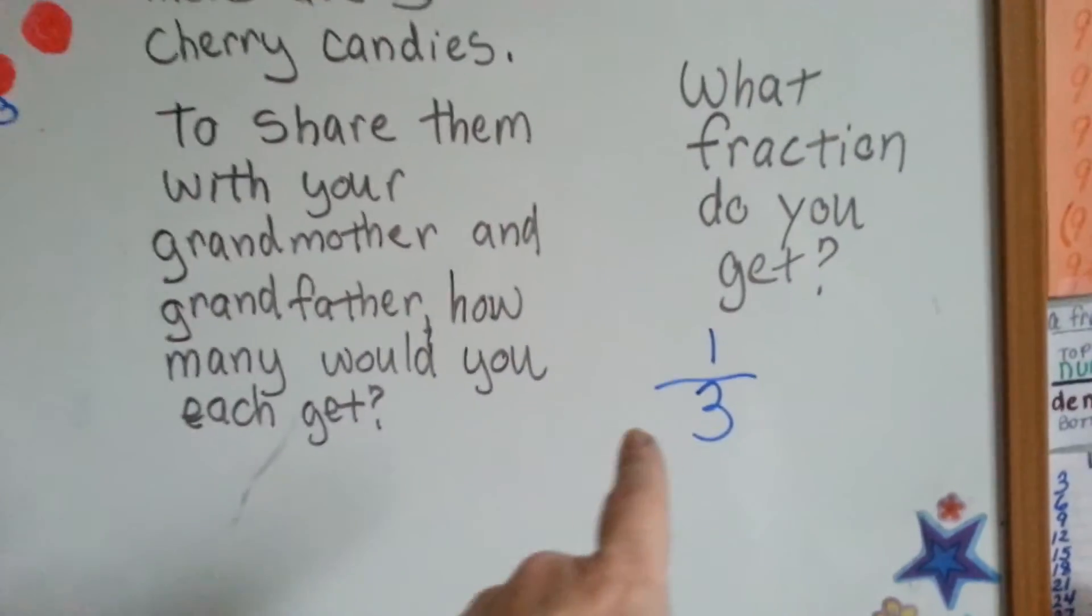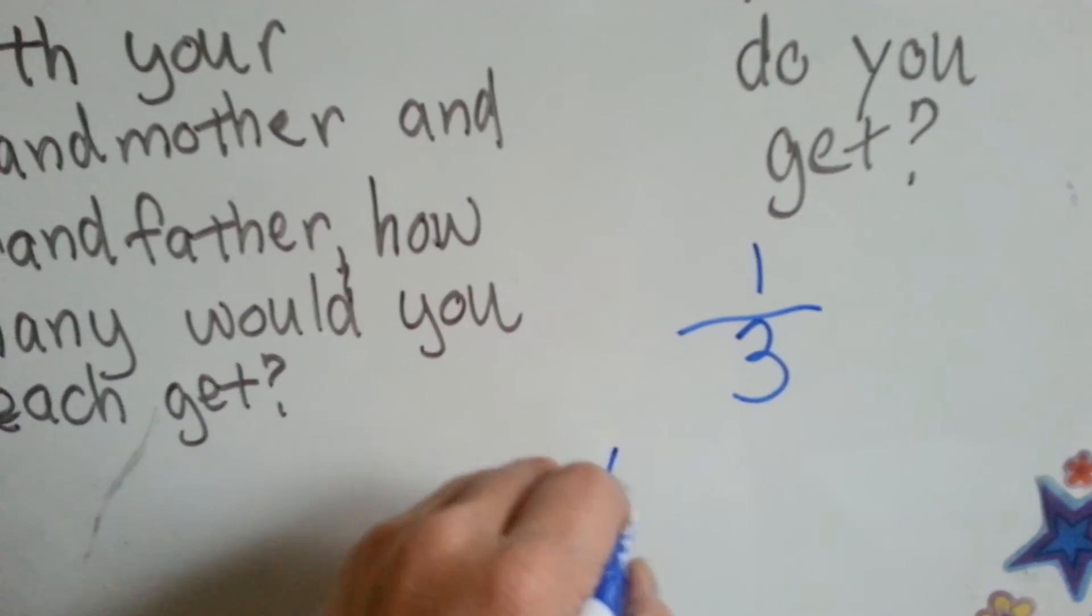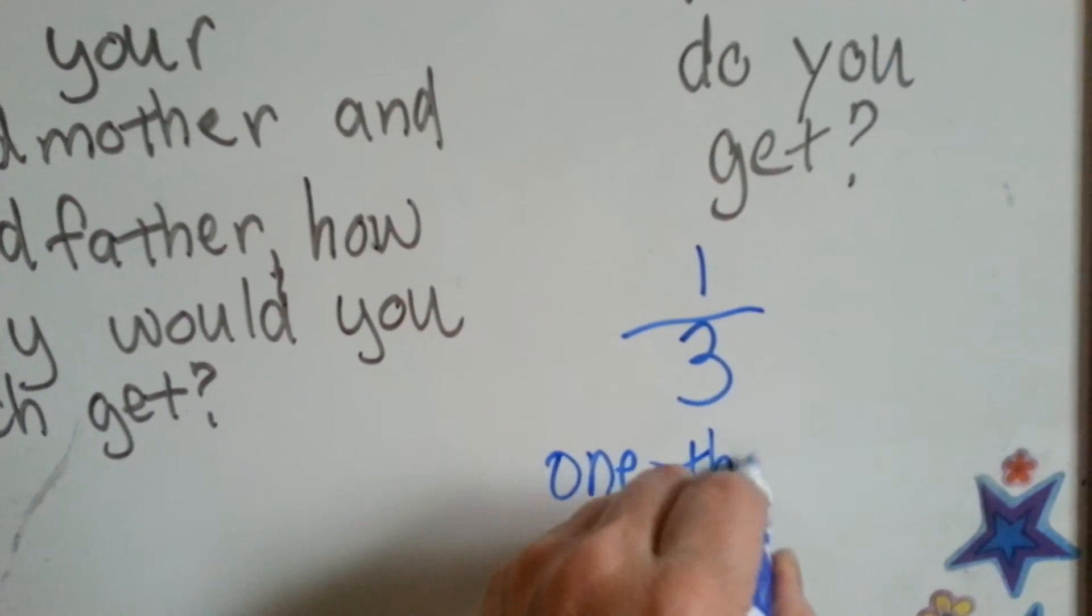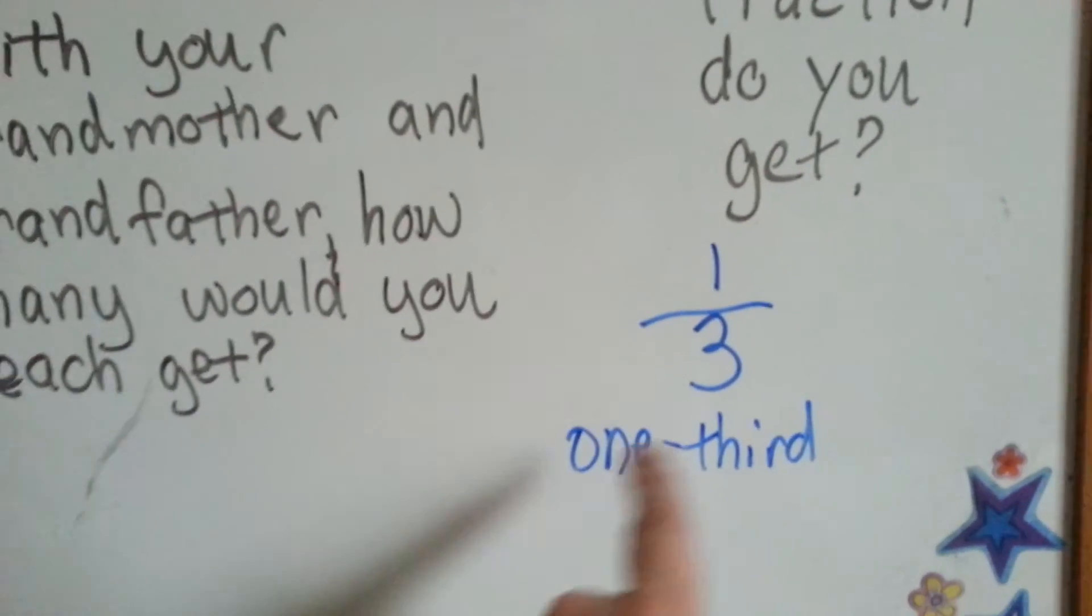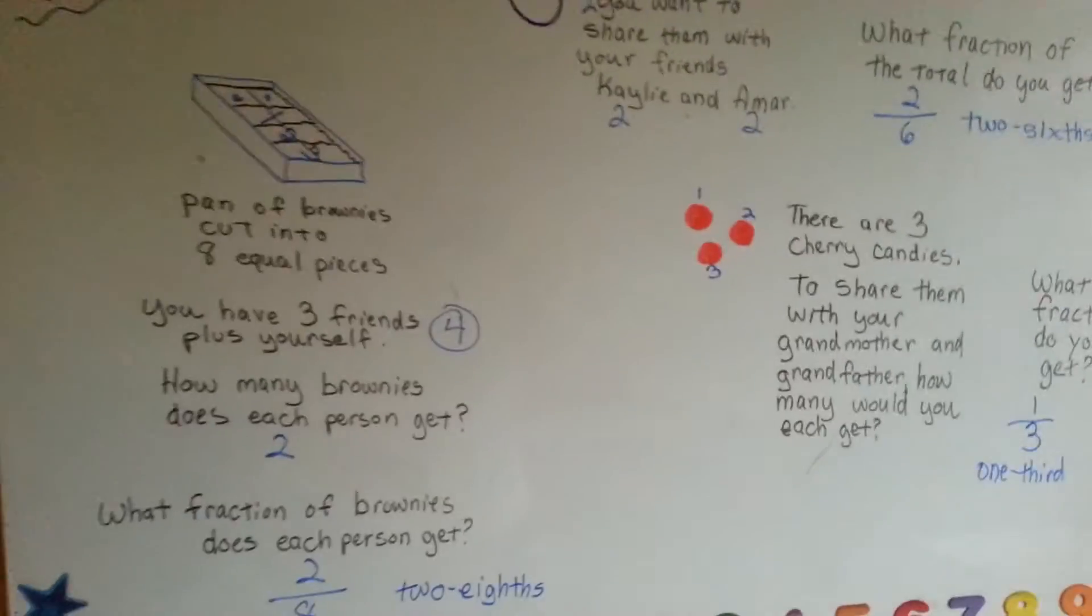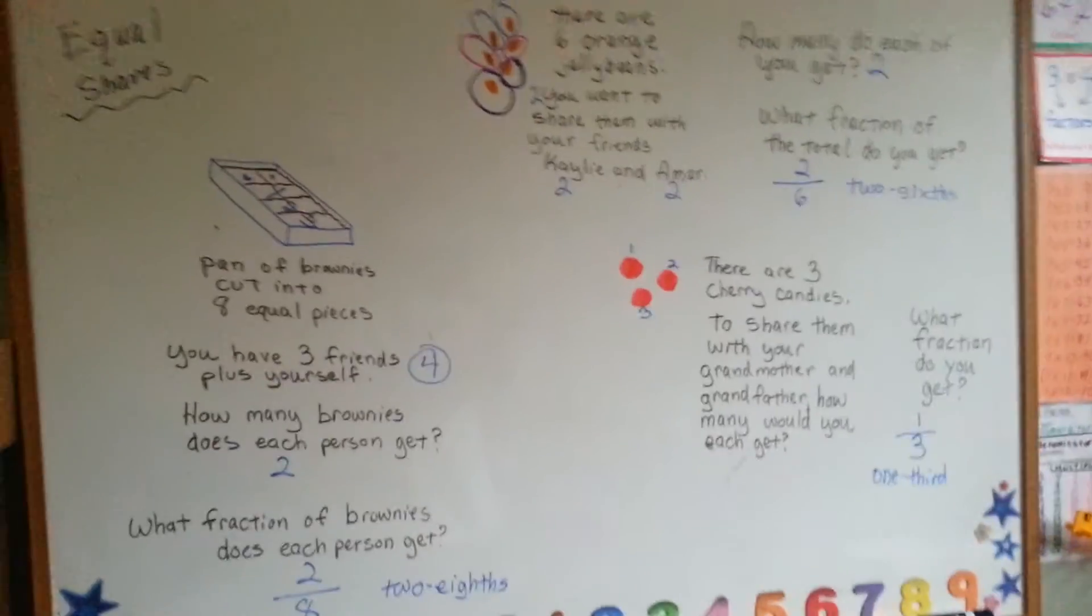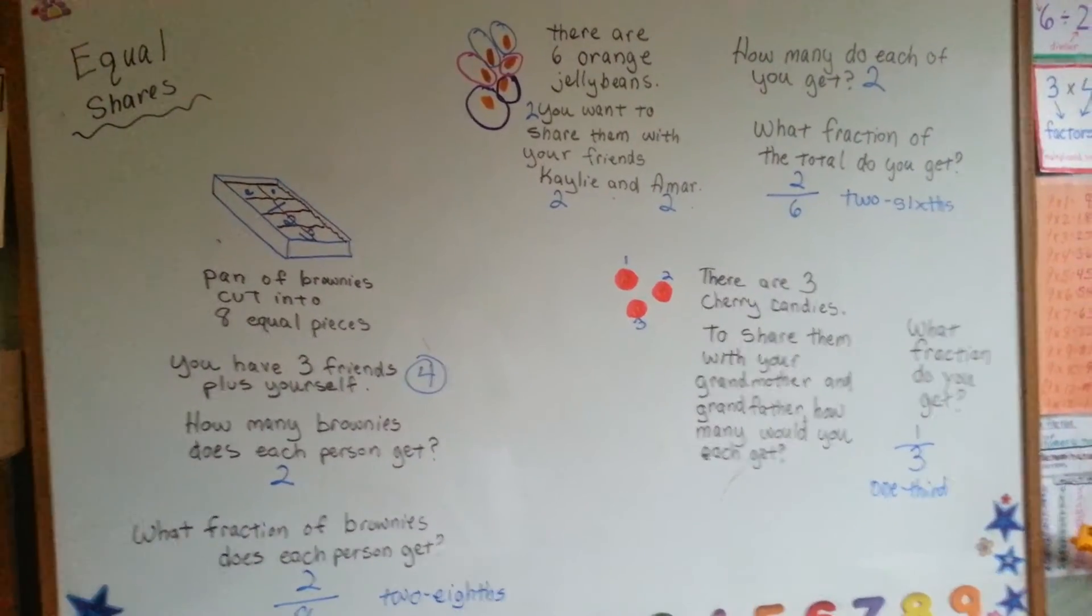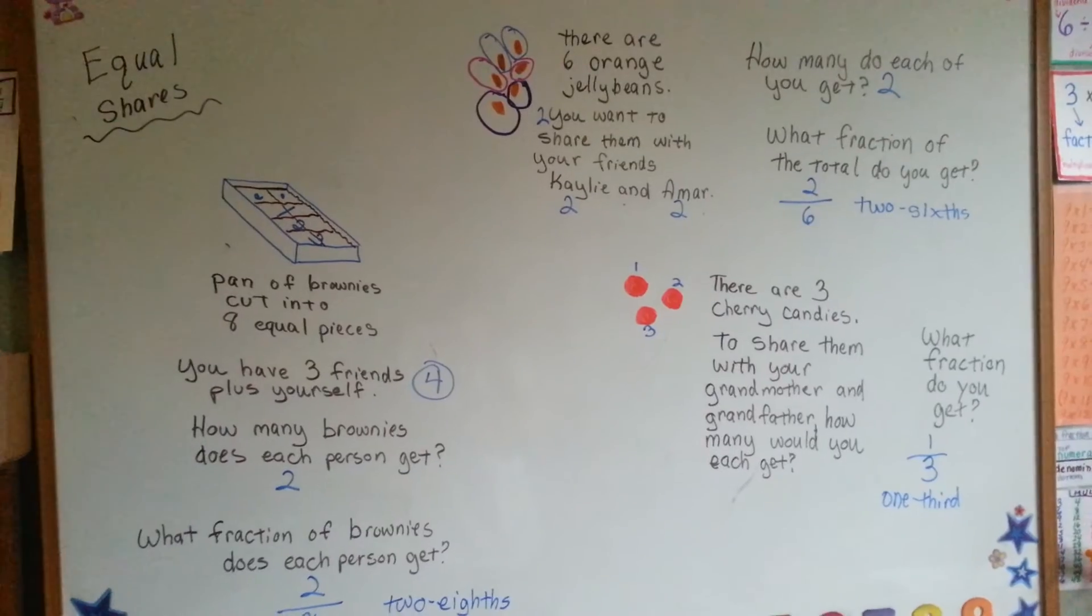For the cherry candies, you got one third. One, hyphen, third. One third. That's equal shares. You split everything up so that everyone gets an equal amount.